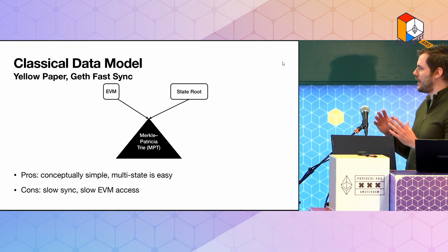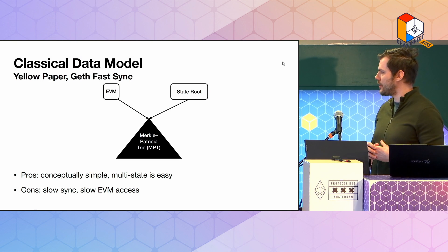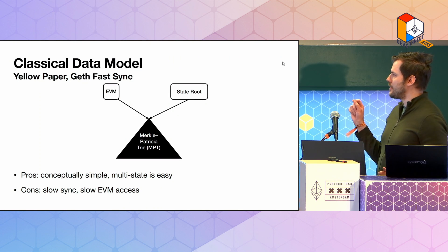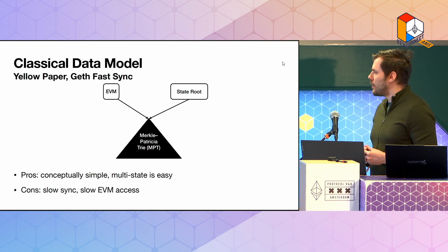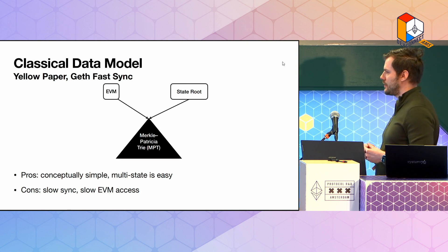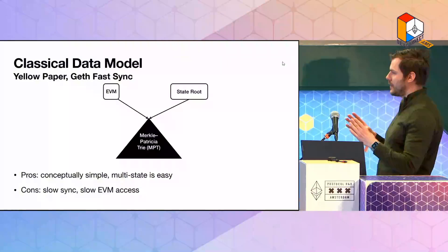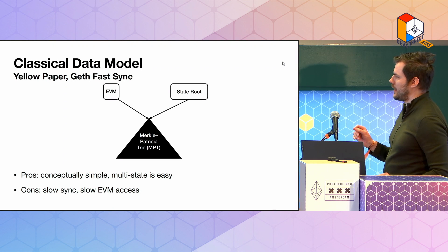How did we used to think about the database model — the state model — in the old days? It was nice and simple: you have the Merkle Patricia Trie, and it was used for two purposes. It was used to calculate the state root, and also the EVM, which has access to the state, used to go through the Merkle Patricia Trie. The benefits of this data model are that it is conceptually simple because it's only one data structure you have to deal with.